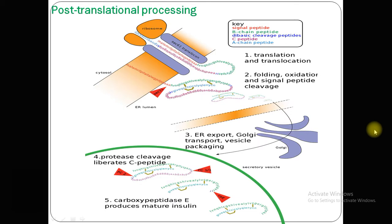This post-translational modification diagram shows the modification of insulin. At the top you can see the ribosome translating a messenger RNA sequence. This is the messenger RNA sequence, and there is the signal peptide shown in red, along with the B chain peptide, A chain peptide, and C peptide. After the protein passes through the endoplasmic reticulum, it is cut, folded, and held in shape by disulfide bonds.